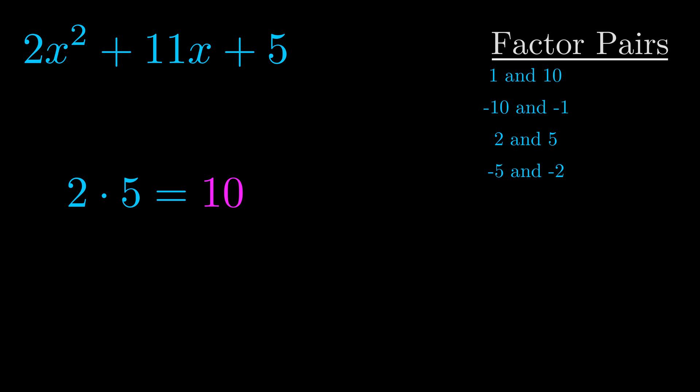The b value is the coefficient on the x term. That's the middle term, the one that we haven't done anything with yet. And really this is the only factor pair that we need.